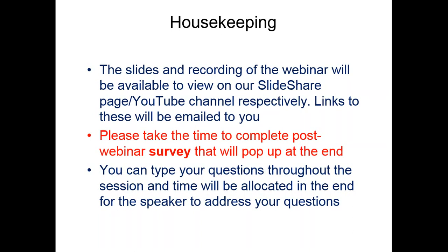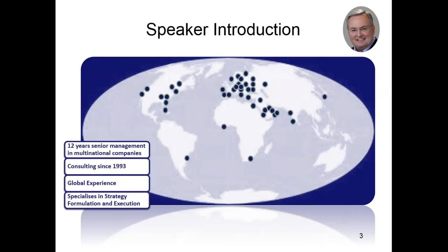Good afternoon everybody, thank you for attending the webinar. Just a two-minute introduction about me: my name is James Graham, I'm from the United Kingdom, and I've been working with strategy for over 30 years. I spent the first 12 years in multinational companies in senior management functions, sitting on strategic committees. Then in 1993 I moved into management consulting, gaining global experience both consulting and running seminars for Informa in the Middle Eastern region. My speciality is formulating and executing strategy.